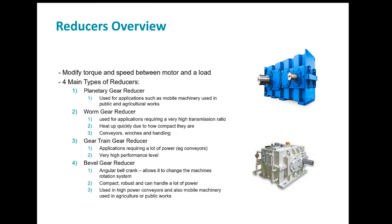When should you use a bevel gear reducer? The bevel gear reducer's main characteristic is its angular bell crank, which allows the user to change the machine's rotation system. They're very compact, robust, and can handle a lot of power. They're also very quiet, offer high performance levels, and are energy efficient. Bevel gear reducers are generally used for high-powered conveyors, but also for mobile machinery used in agricultural or public works.